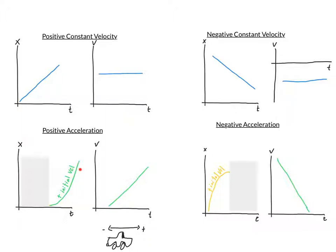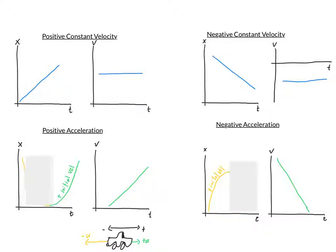Looking at acceleration graphs: on a position-time graph with positive acceleration, you get a quadratic curve going upward, covering more and more displacement as time goes on. The velocity-time graph starts low and increases linearly, and the slope of that velocity-time graph is the acceleration.